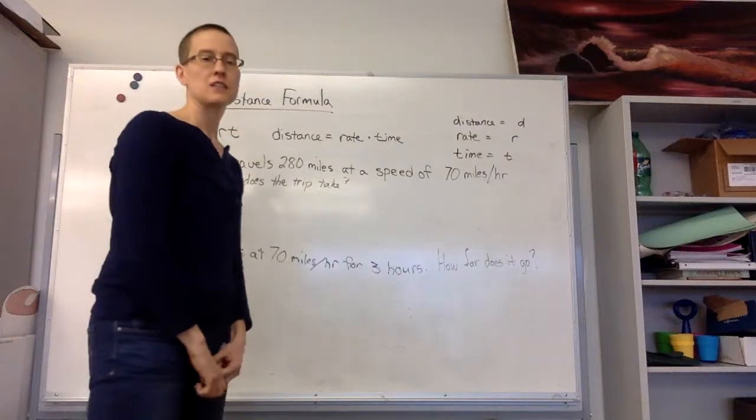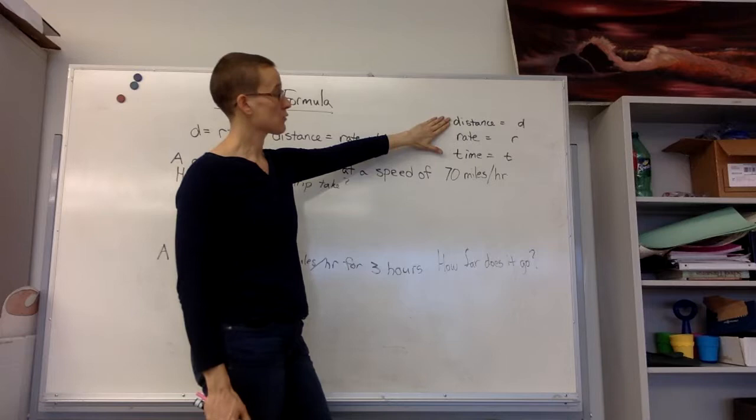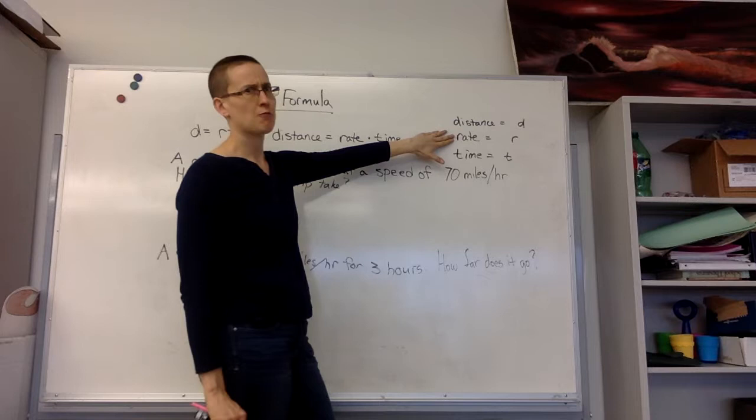Hello, next we're going to talk about the distance formula. The distance formula is distance equals rate times time. This is for any unit of distance. So if we used miles for distance, we would use miles per hour for the rate. Sometimes we think of rate as speed, and t is for time.